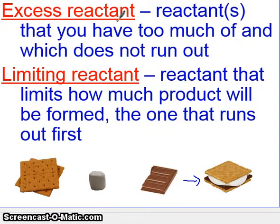So what this means, the excess reactant is the reactant that you have too much of and which does not run out, whereas the limiting reactant is the one that does run out. It's the one that runs out first, and it limits how much product will be formed.